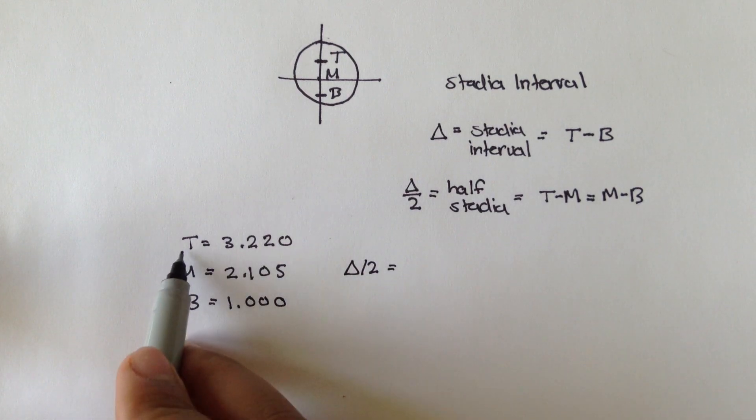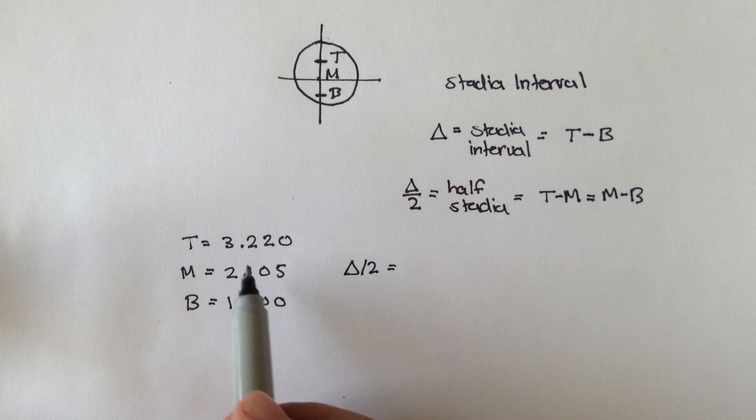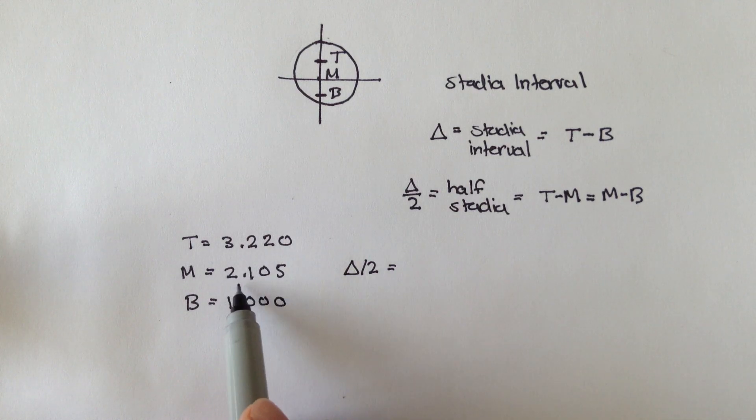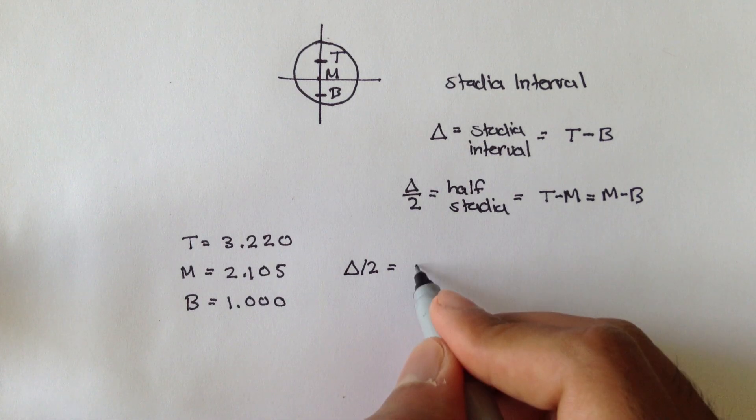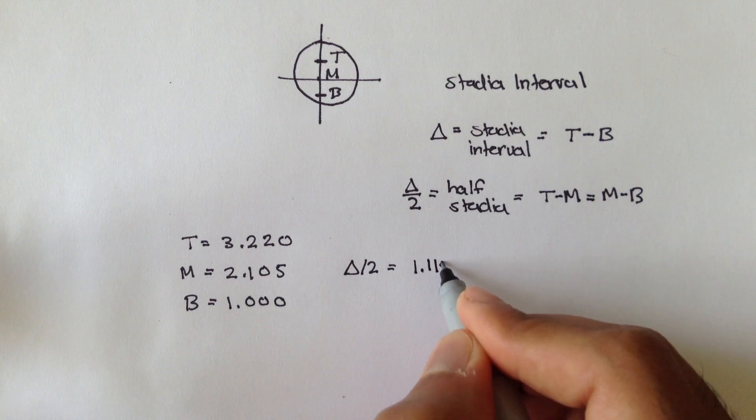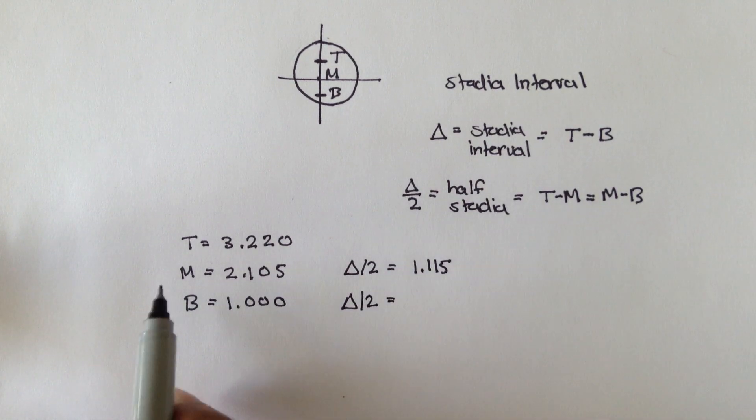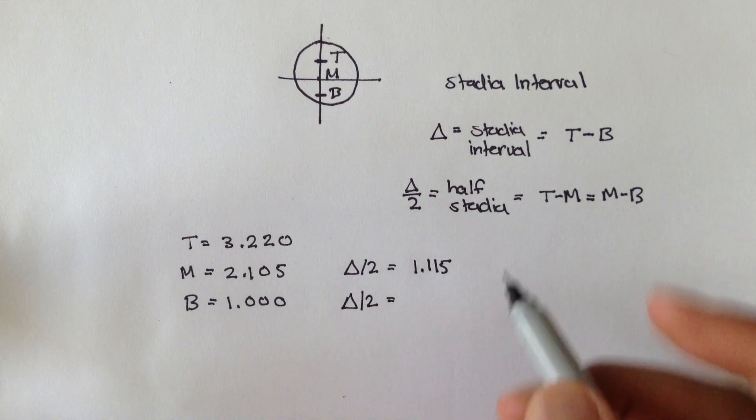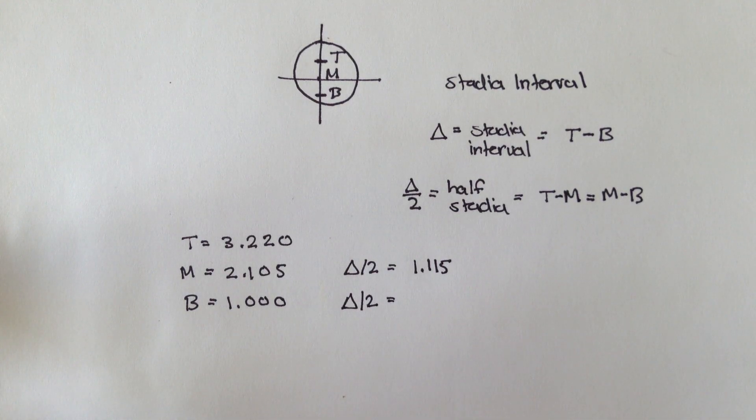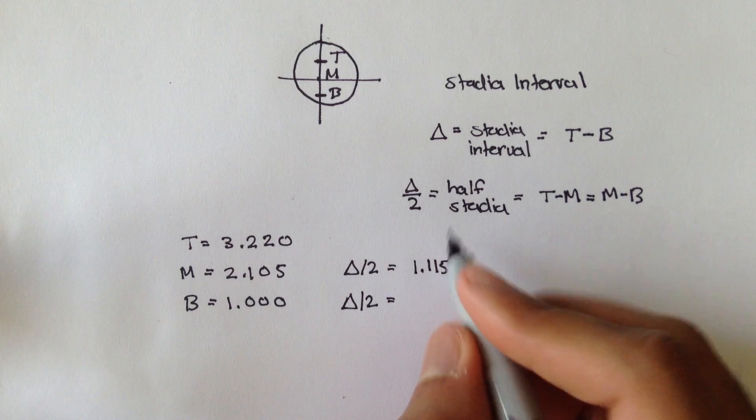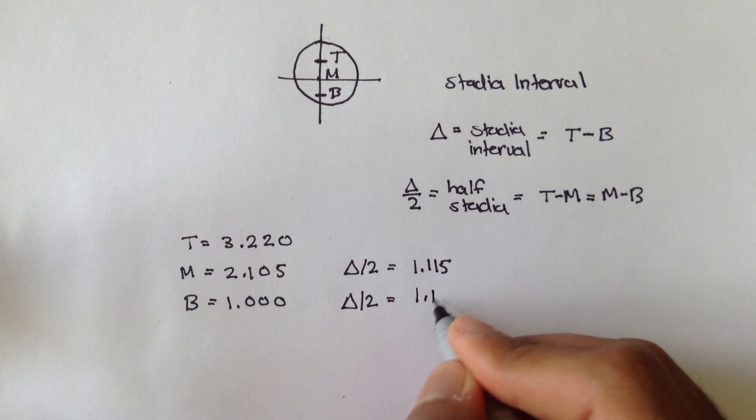we could figure out that the half stadia, one of the half stadias, which is the top minus the middle, if you do 3.220 minus 2.105, you get 1.115. And the half stadia for the middle minus the bottom, which is 2.105 minus 1, you would get 1.105.